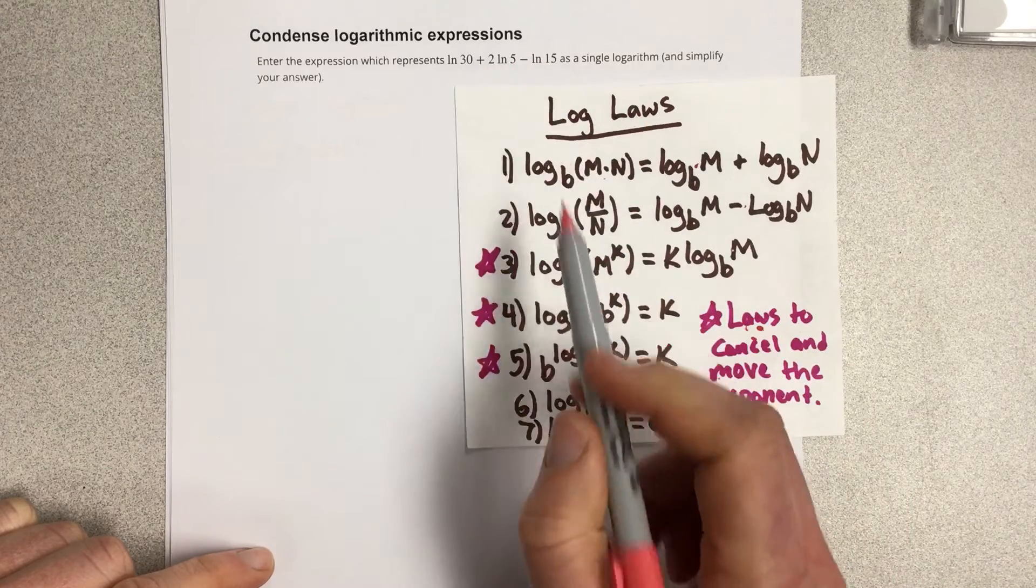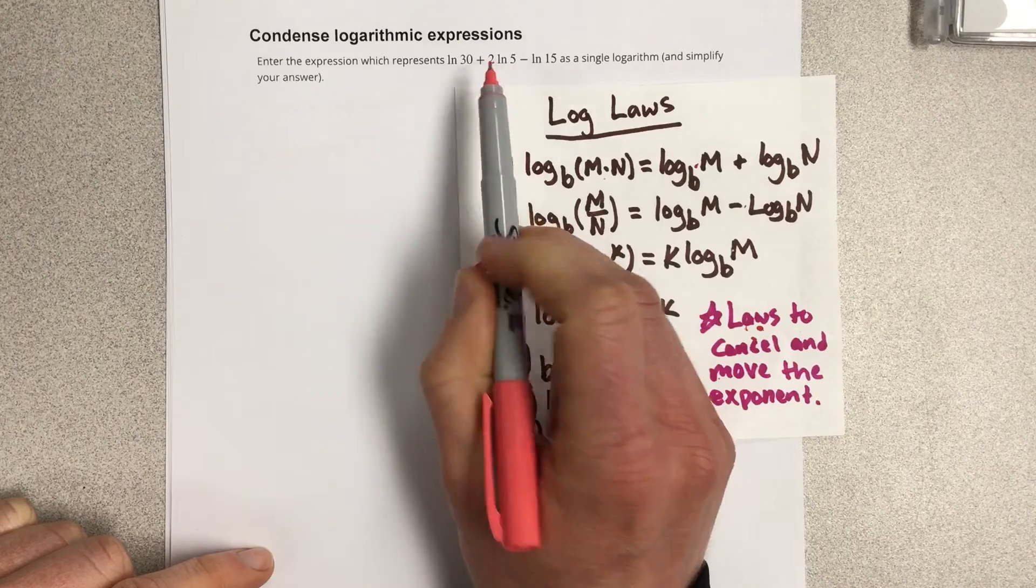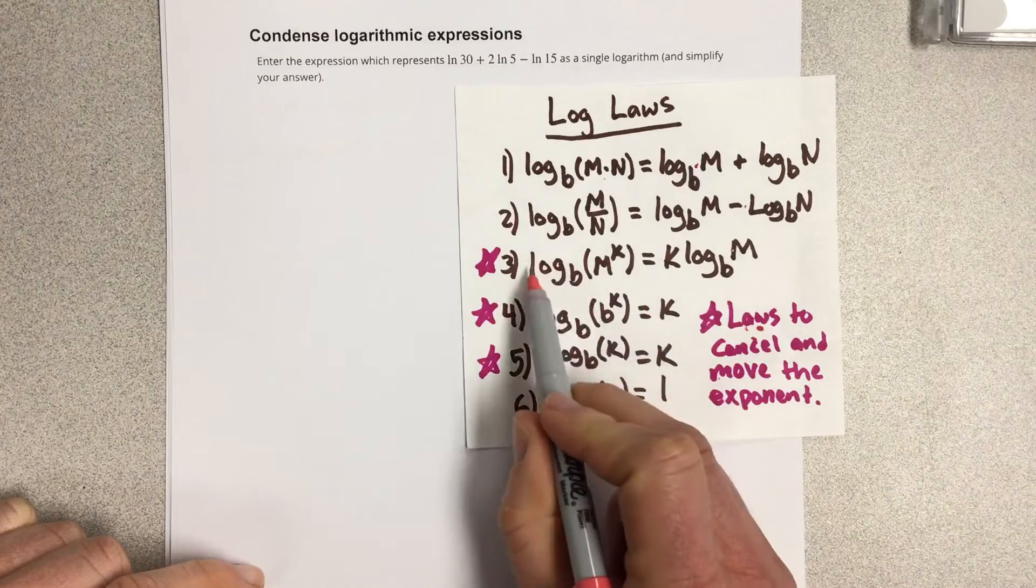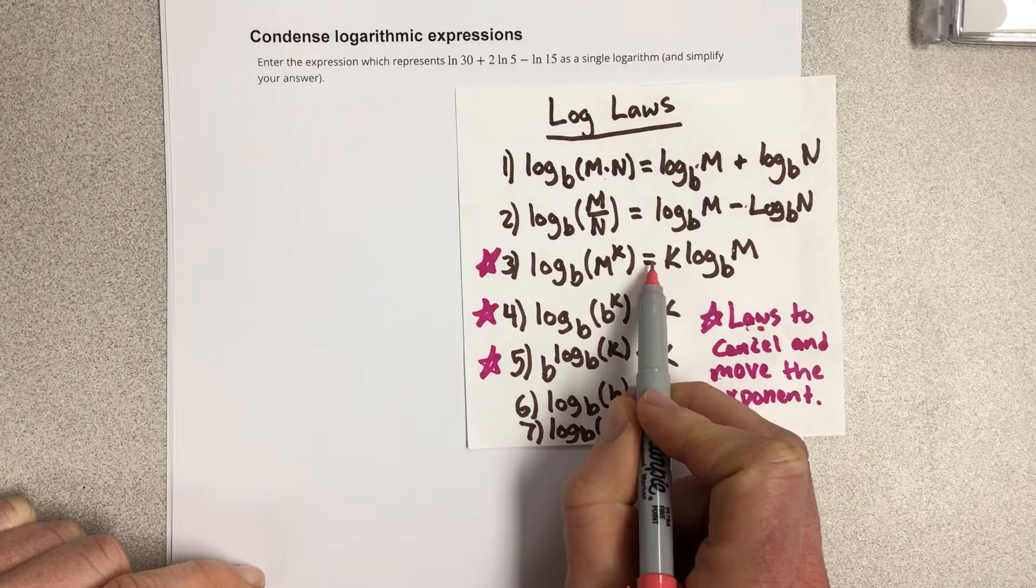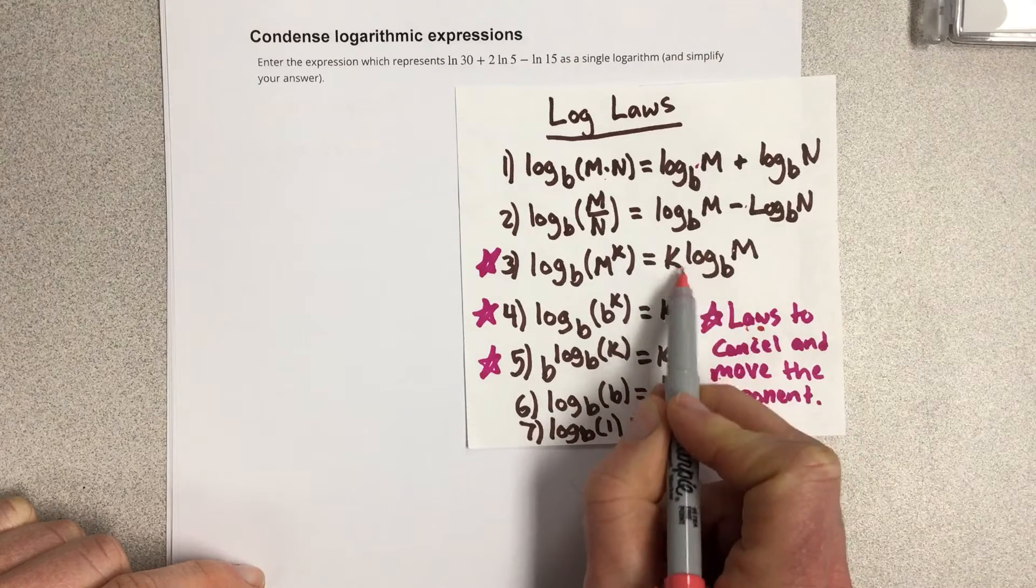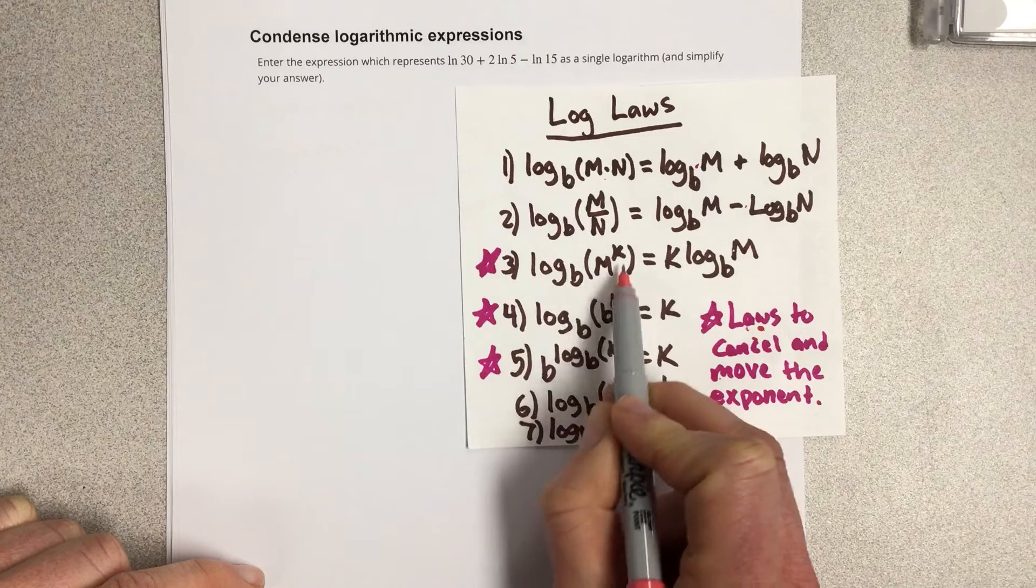The first thing we need to do is look at this leading coefficient 2 and realize that we have the power rule, which is log base b of m to the k equals k log base b of m. We have this piece of it, and we're going to rewrite it as this piece.